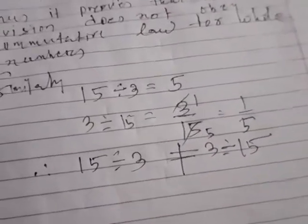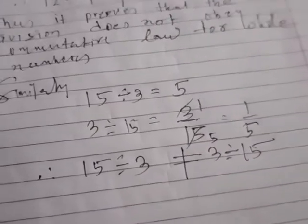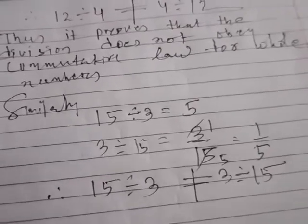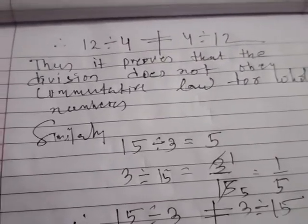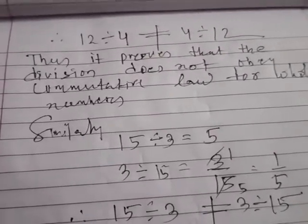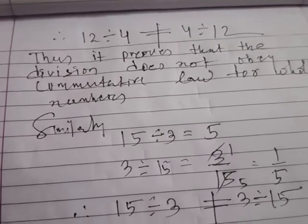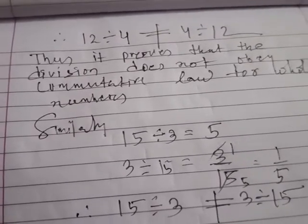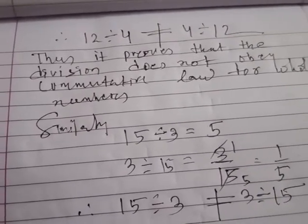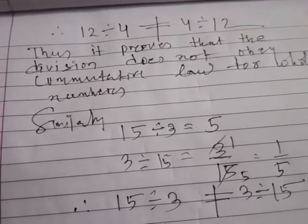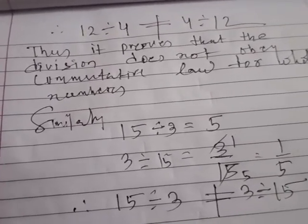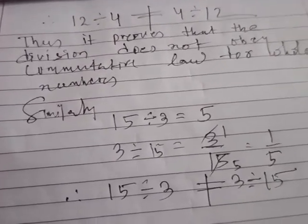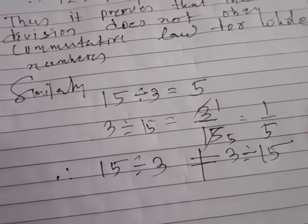So it is clear that division also does not obey commutative law for whole numbers. To summarize commutative law: addition and multiplication always obey commutative law, while subtraction and division do not obey commutative law for whole numbers.